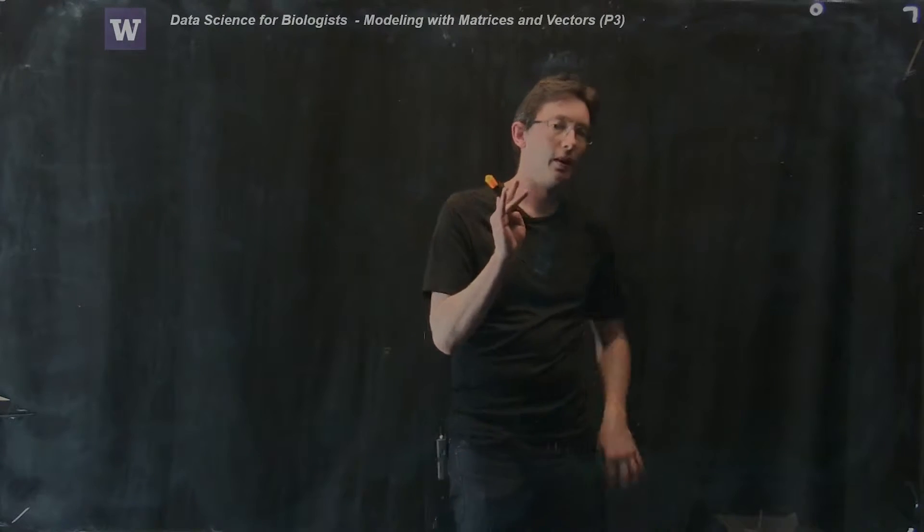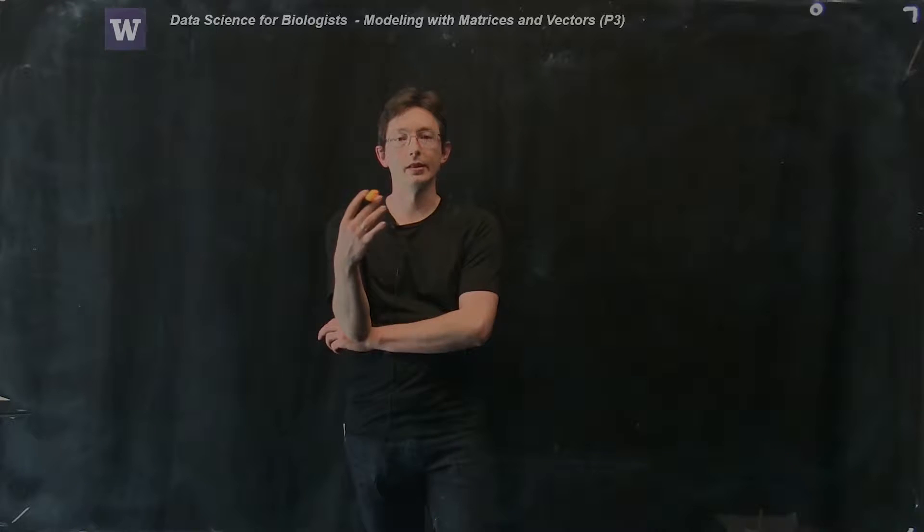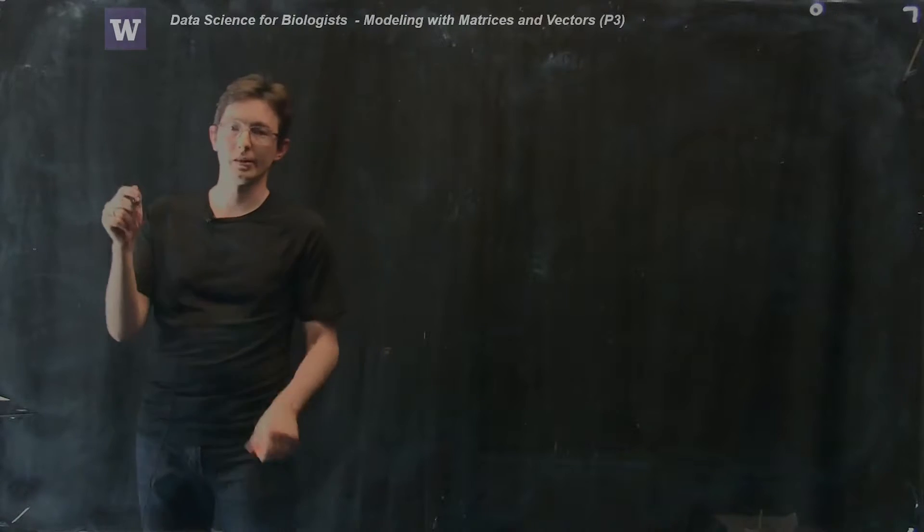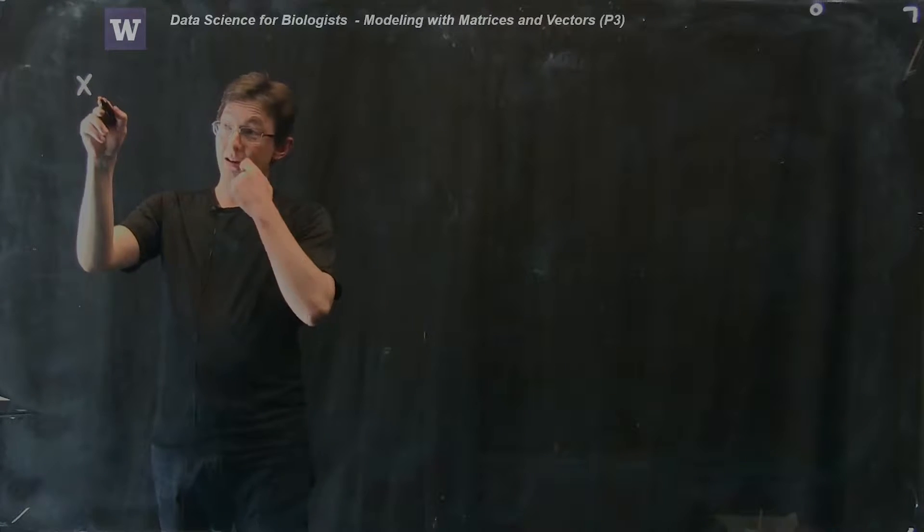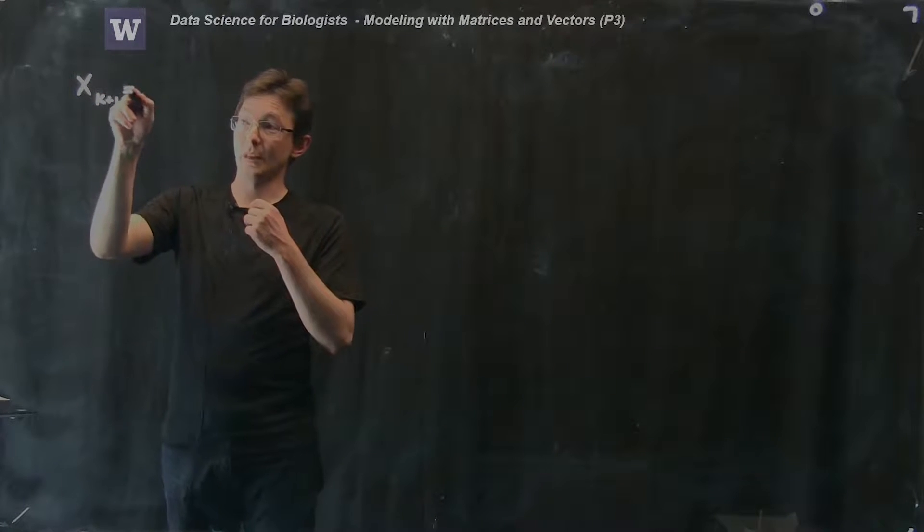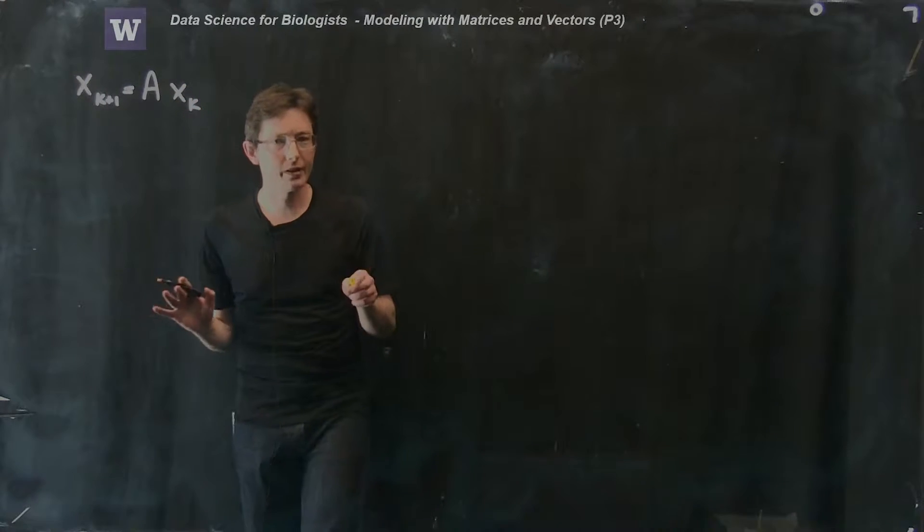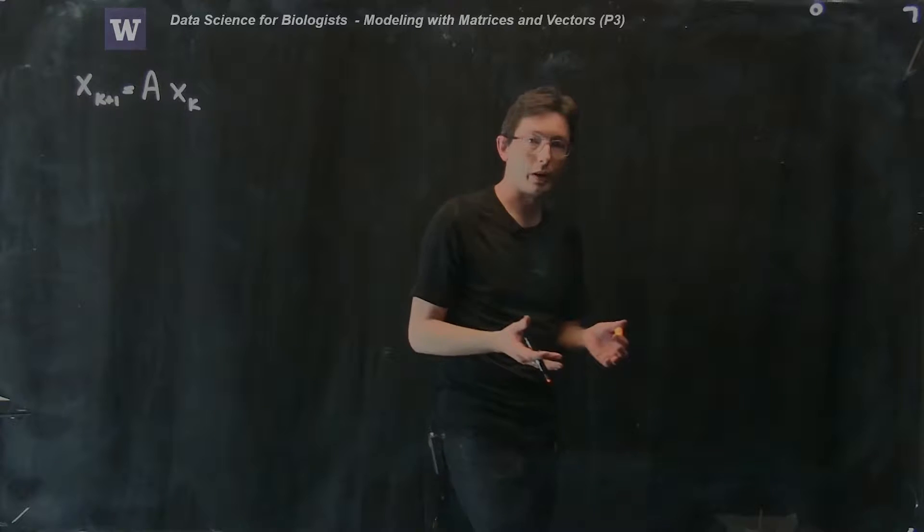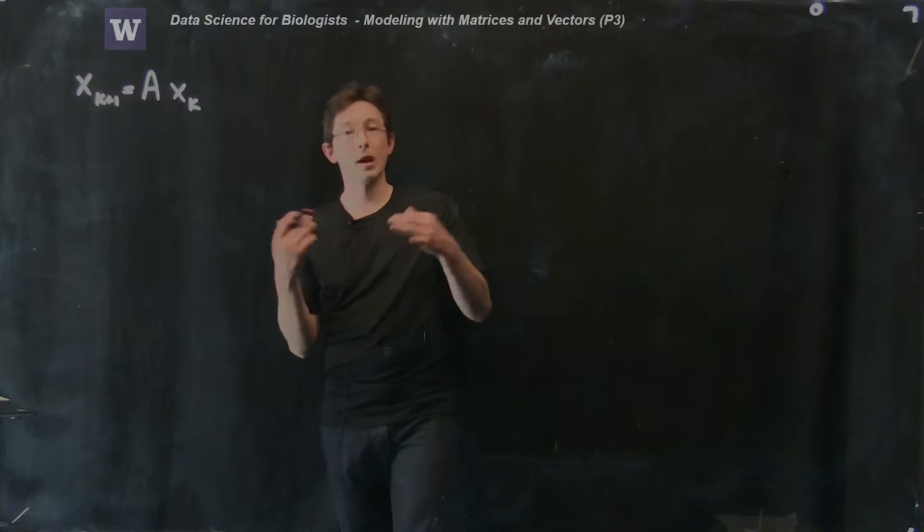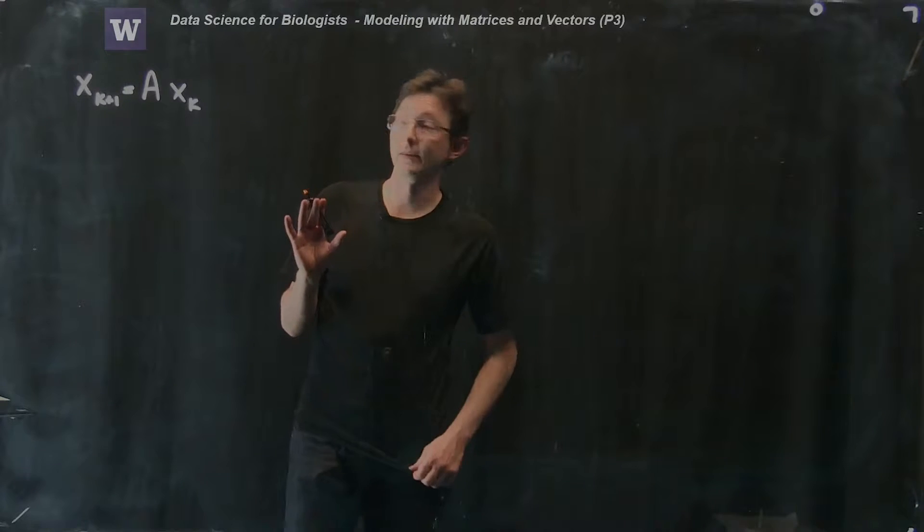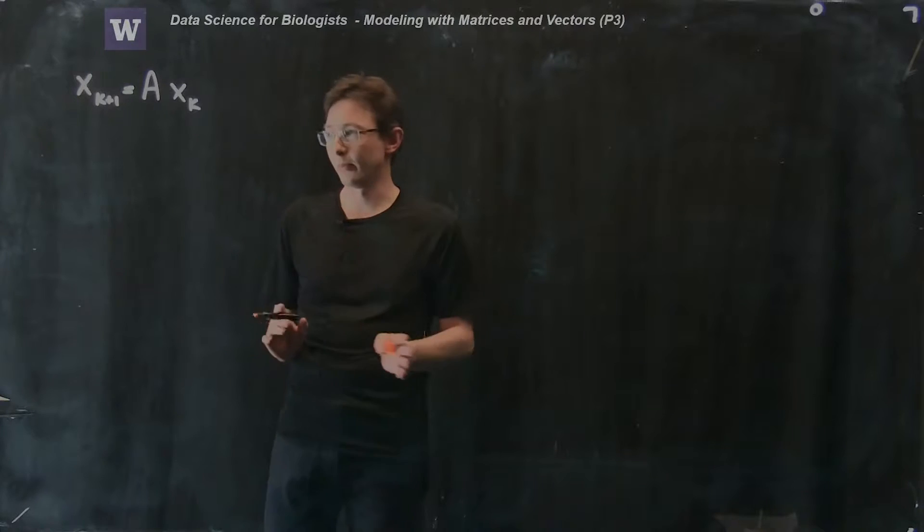The first thing I want to do is really re-emphasize how I'm using this subscript index k. So remember we had a vector x_k+1 equals a matrix A times that vector x_k. This is often a confusing point for students who are first-time users of MATLAB or mathematical modeling using matrices and vectors, and I really want to demystify this. It's simple, straightforward, not a big deal.